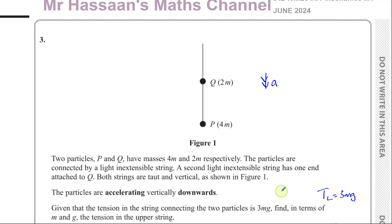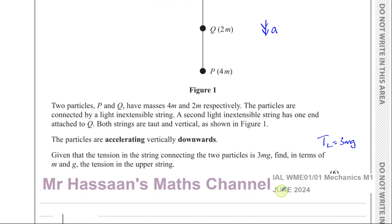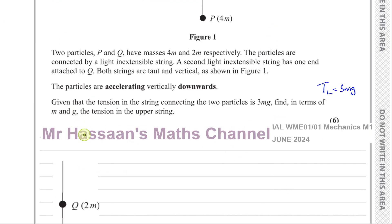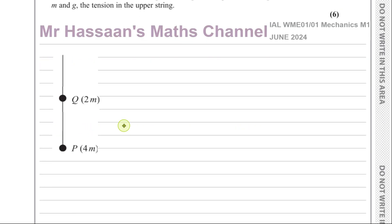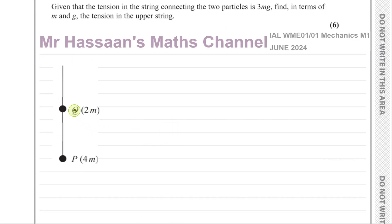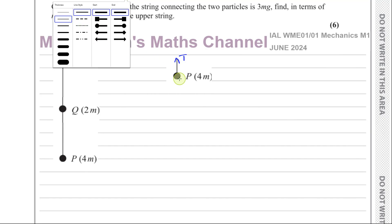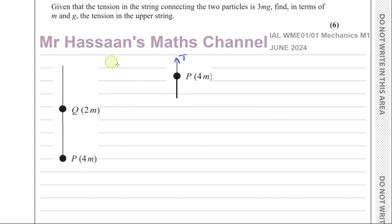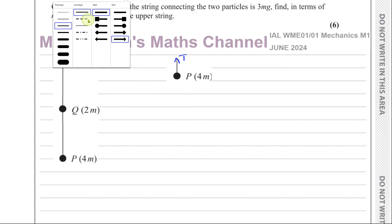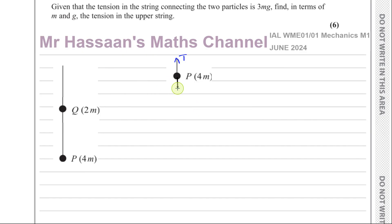I've got this diagram copied down here. What I'm going to do is consider the forces acting on Q and P separately. Let's start with P. The forces acting on P are the tension in the lower string and also its weight. One of the things students have a big problem with is when you have to consider forces in connected particles.